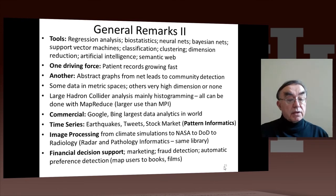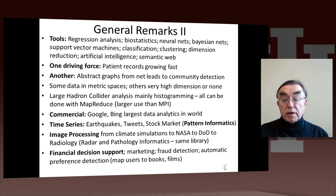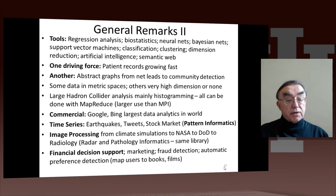We need to do image processing — that's an important example. Image processing comes from climate simulations, from medicine, from defense applications where we're looking for vehicles and things like that. There are areas such as radar informatics and pathology informatics which actually use the same image processing algorithms. So we have single algorithms crossing many fields.